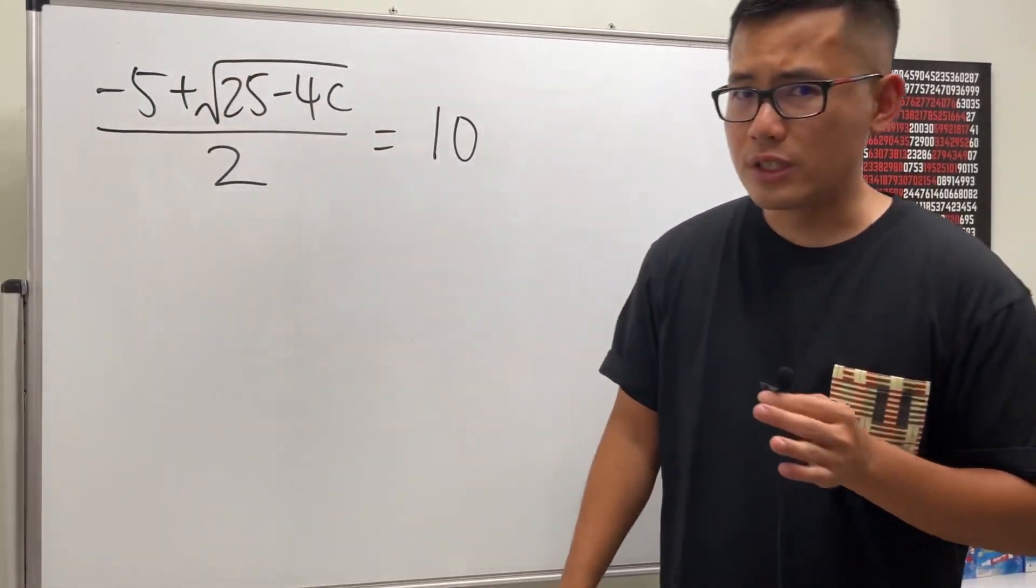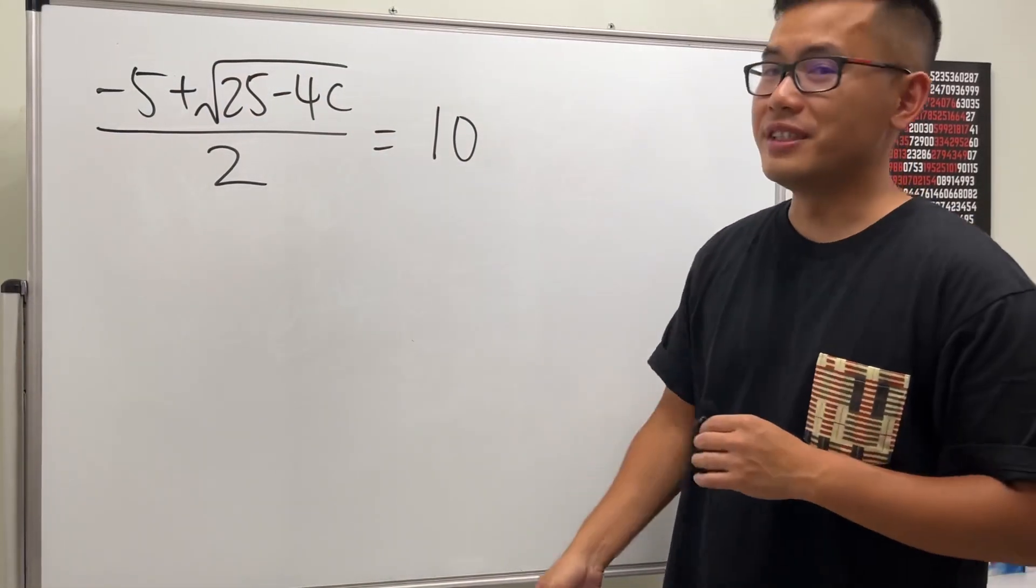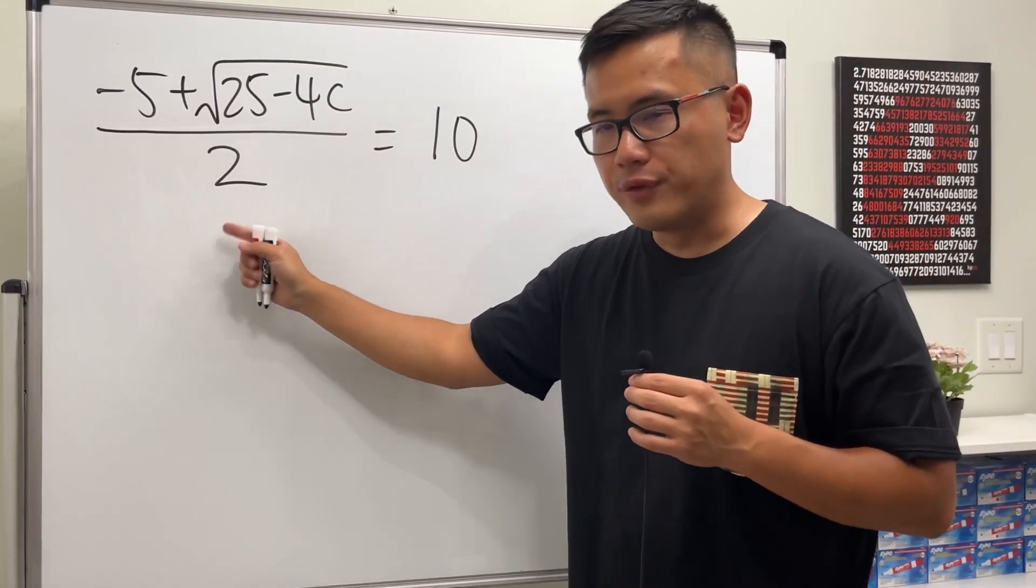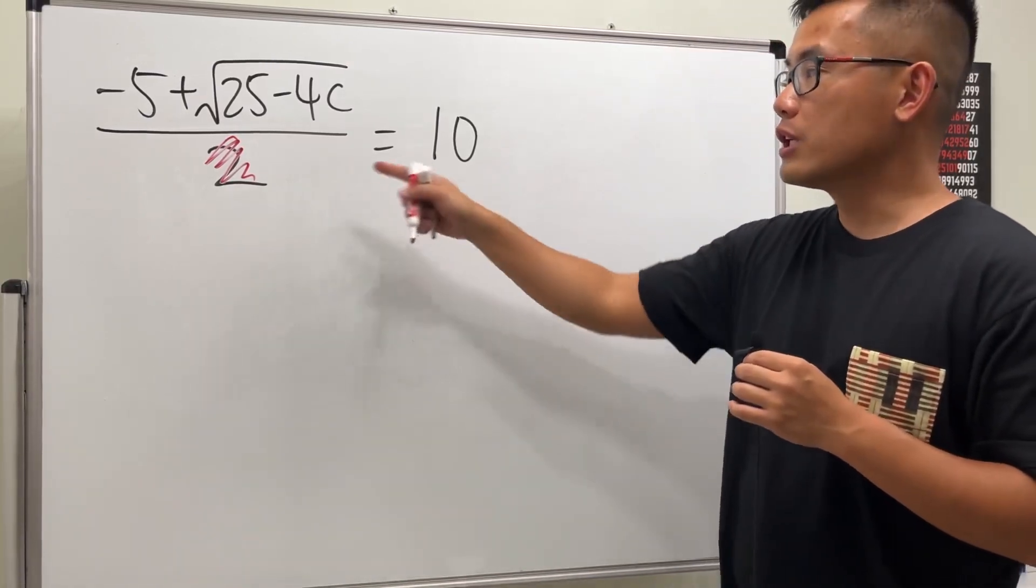If today you don't have to show your work when you're solving equations, then I would suggest you do this. Check this out. Our goal is to solve for c. We see that we have to get rid of this 2 first, so seriously just get rid of it. That means we'll have to multiply both sides by 2.